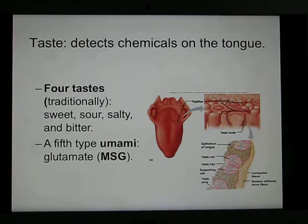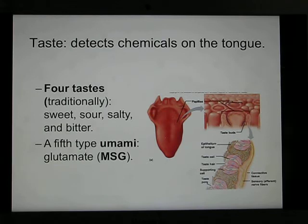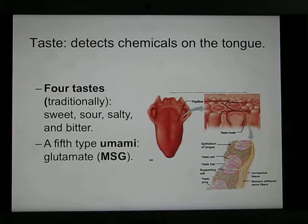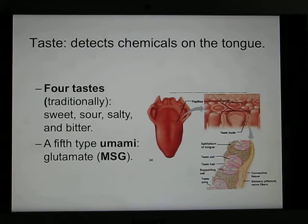Now let's look at the gustatory system. The detector is on your tongue — you have taste buds. There are four traditional flavors: sweet, sour, salty, and bitter. And one newer flavor called umami, which is the savory flavor. It comes from glutamate, an amino acid, and you can use the artificial version like MSG. This is umami.